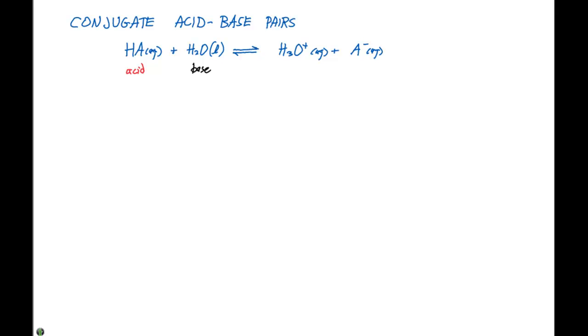On the other side of the equation, we also have our acid, which is H3O+, and our base is going to be A-. Because when we look at the reverse reaction, we also have a proton donor and an acceptor.